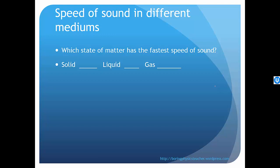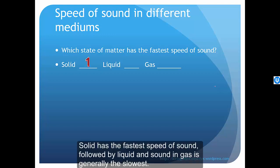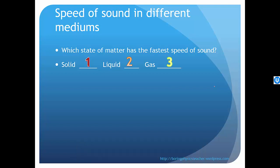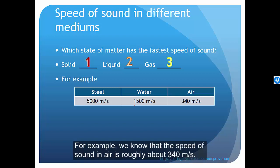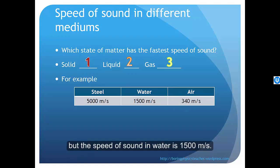You'll find that actually the fastest speed of sound is in solid, then in liquid. The last one is in gas. For example, we know that the speed of sound in air is roughly 340 meters per second. But the speed of sound in water is actually 1500 meters per second. And the speed in steel is actually 5000 meters per second.